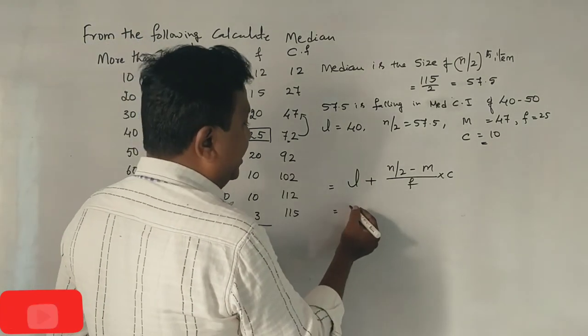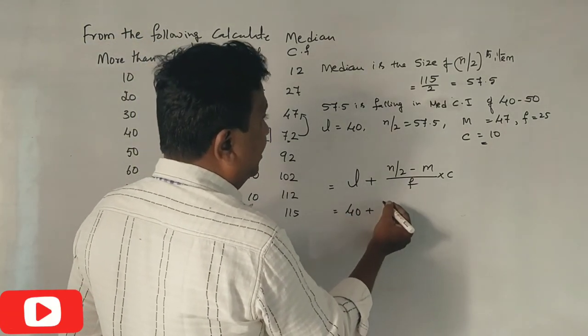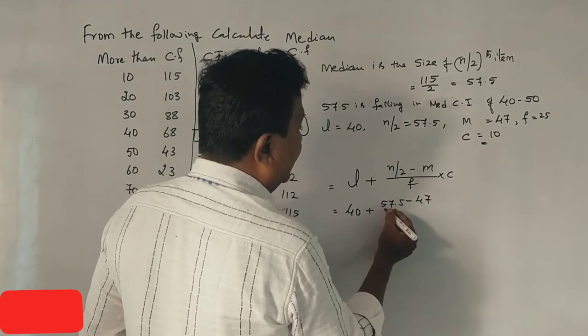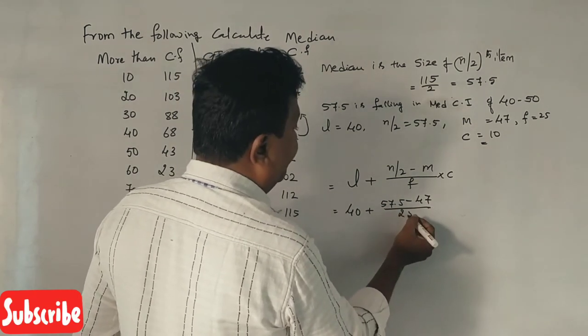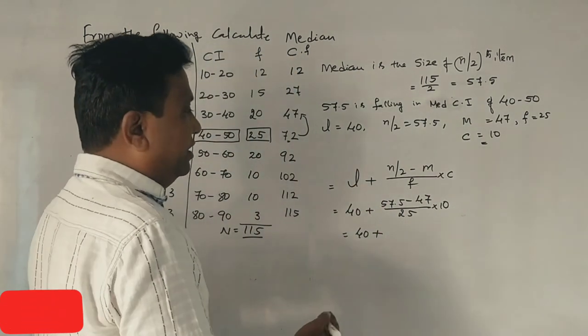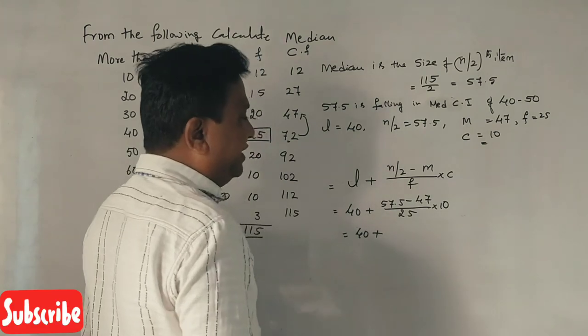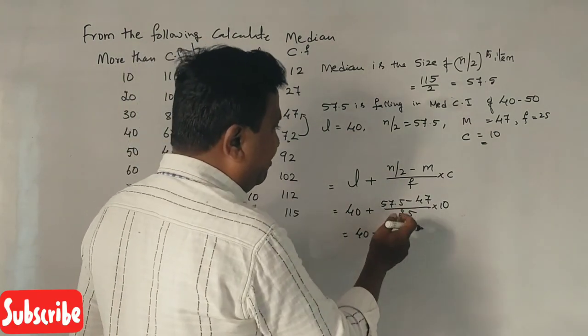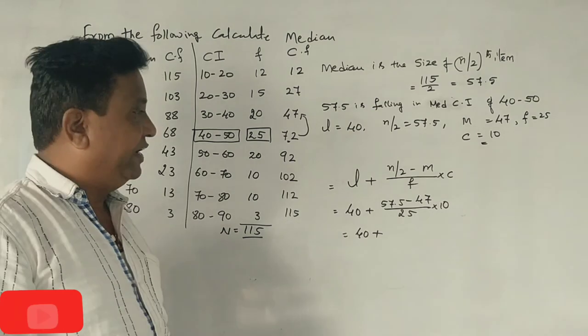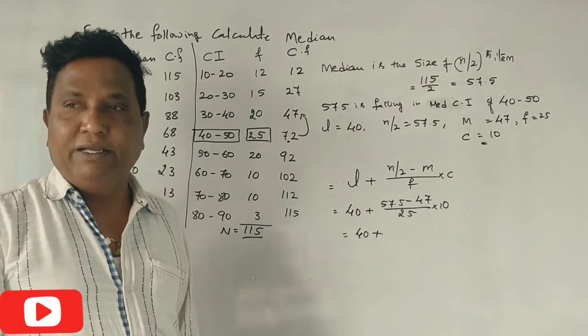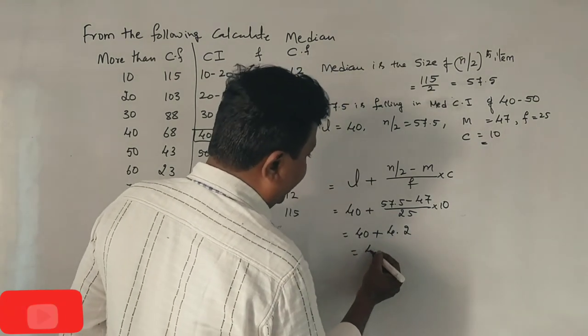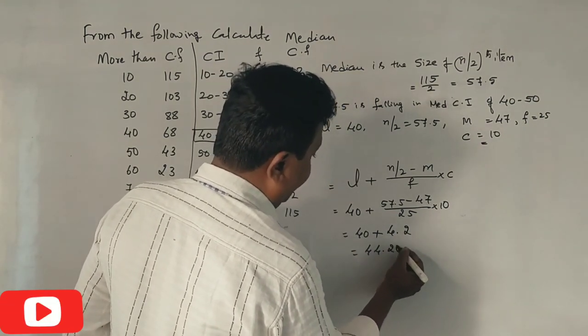Here is the median mark. 40 plus 57.5 minus 47 divided by 25 into 10. This is 40 plus 10.5 into 10 is 105, 105 divided by 25. How much is it? 4.2. The median is 44.2.